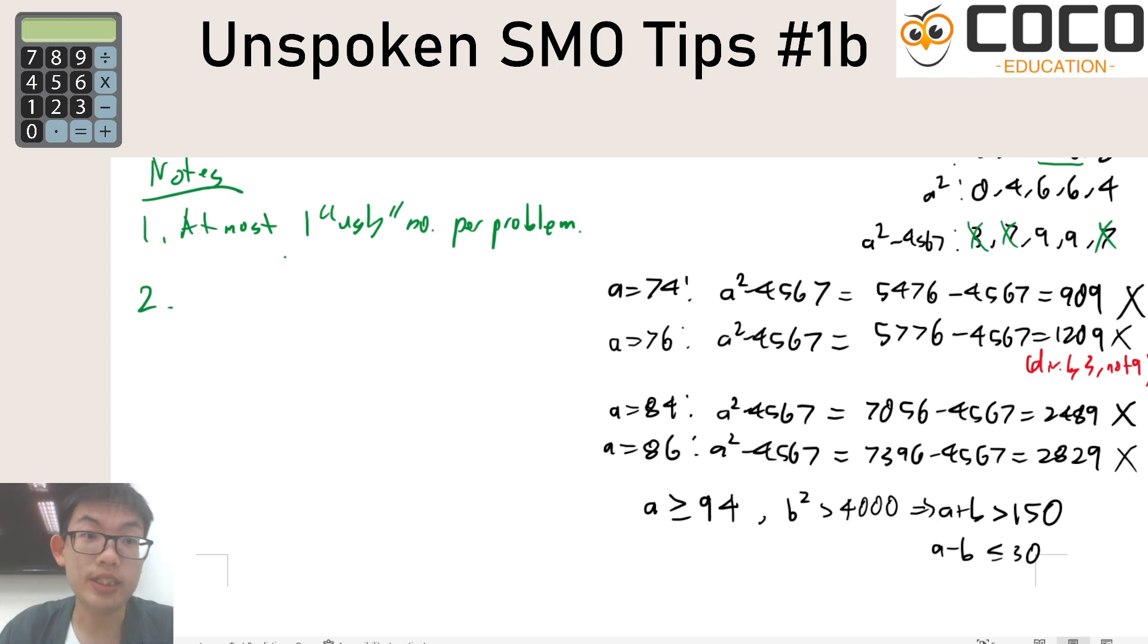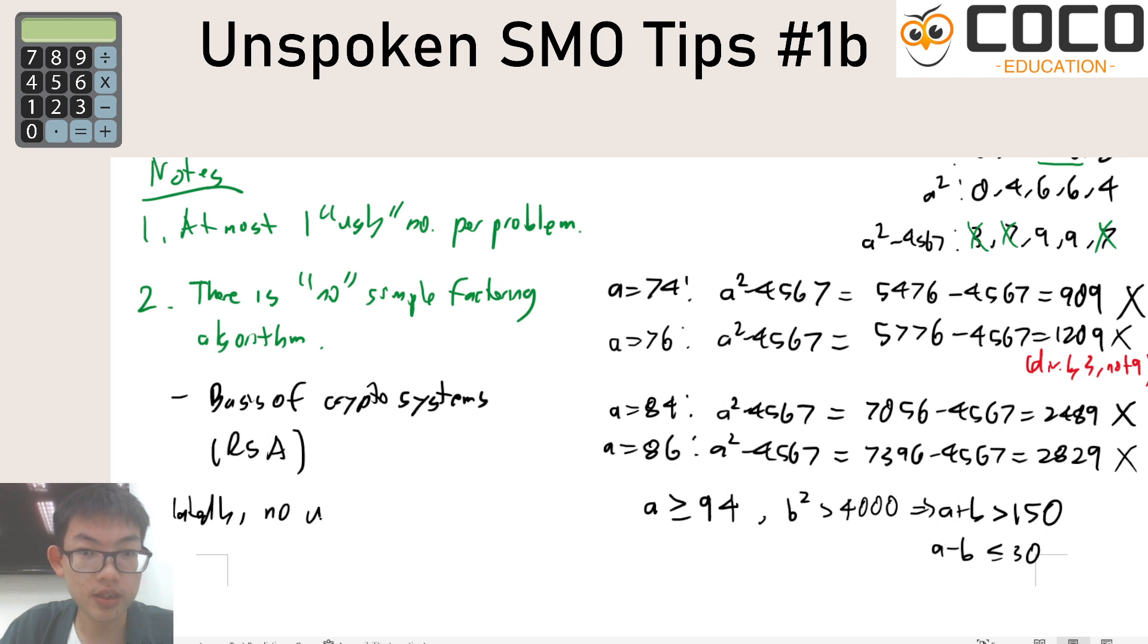But the second thing which is very important is just that there is no simple factorization algorithm, and when we say there is no simple factoring algorithm this is actually the basis of many cryptographic systems, the most famous of which is the RSA crypto system and you can just search this out. RSA is named after three mathematicians whose names I don't quite remember at this point in time. In other words we cannot hope for a universal solution and this is the same as the fact that there is no universal solution to Diophantine equations, of which factoring is basically one sort.